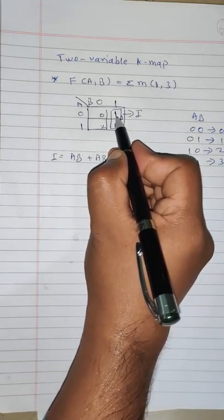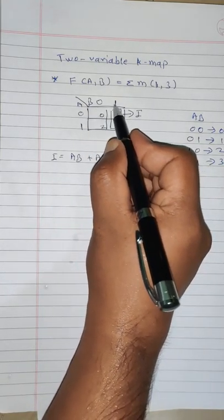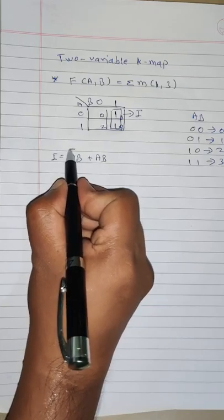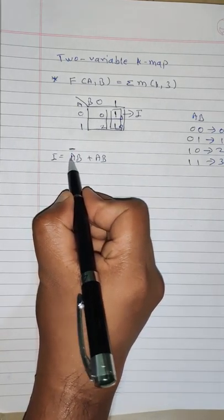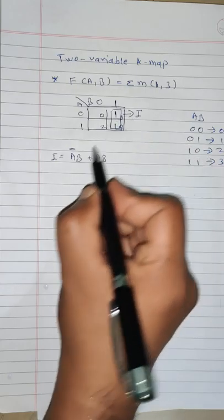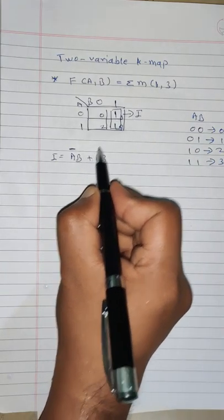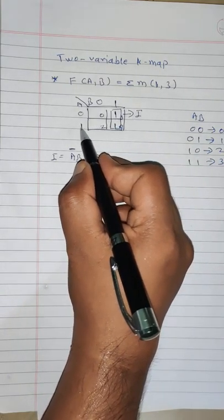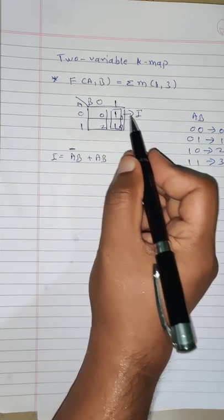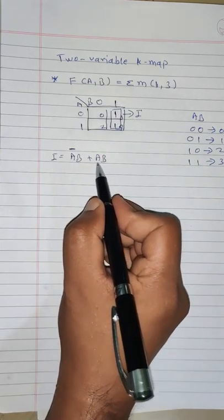Now for this one, the value of a is 0, so we will write bar over it. a equals 0, therefore a-bar, and b equals 1, so b remains as it is. Now for this one, a equals 1, b equals 1, so we have a and b.